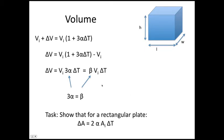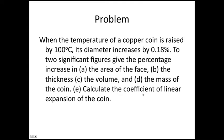As an exercise, show that for a rectangular plate, the change in area equals 2 times alpha times the initial area times the change in temperature, where A is the surface area. Now a problem: when the temperature of a copper coin is raised by 100°C, its diameter increases by 0.18%. Give the percentage increase in: A) area of the face, B) thickness, C) volume, D) mass, and E) calculate the coefficient of linear expansion.